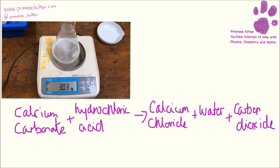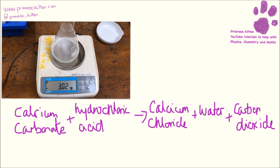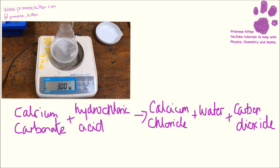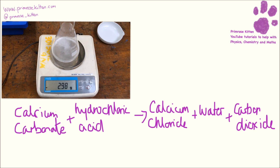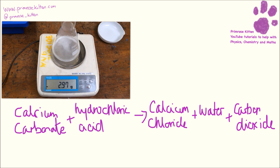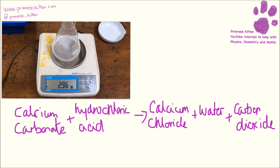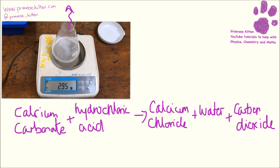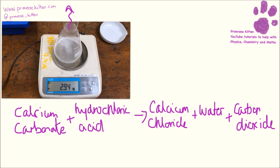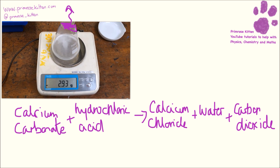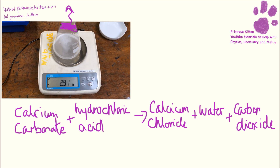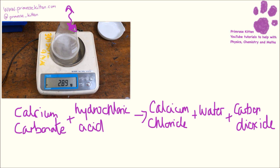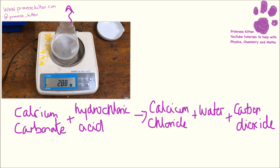That's also the reason the mass is going down. This is sometimes a bit complicated to get your head around because it looks like the mass is just getting less. But you know from the law of conservation of mass that we can't just lose things — it's just that the carbon dioxide is escaping out of the top. Sometimes you might see this done with a cotton wool bung in the top, but that's really just to stop things falling in. It won't stop the carbon dioxide being released.